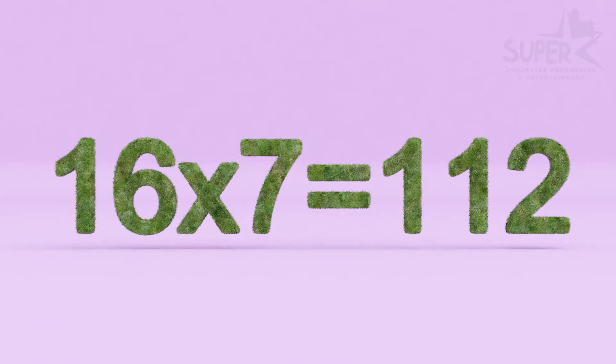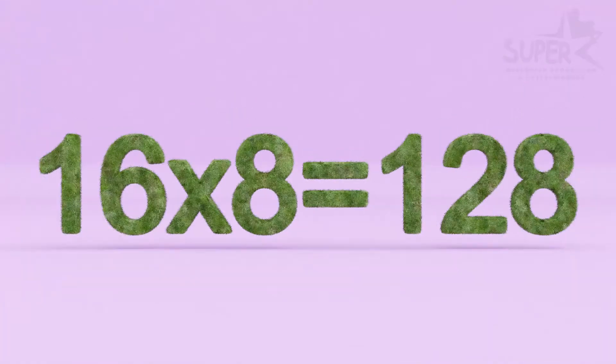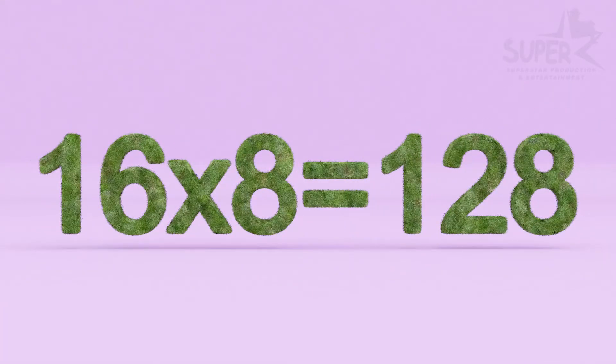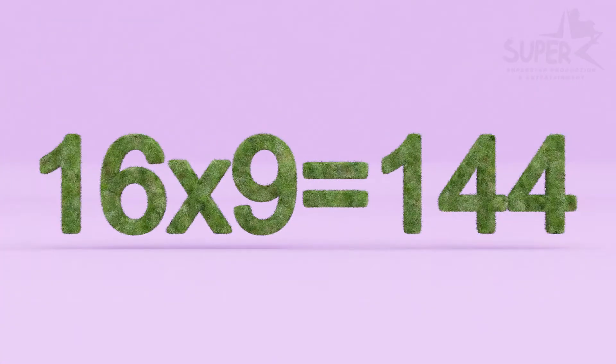Sixteen Sevens are 112. Sixteen Eights are 128. Sixteen Nines are 144.